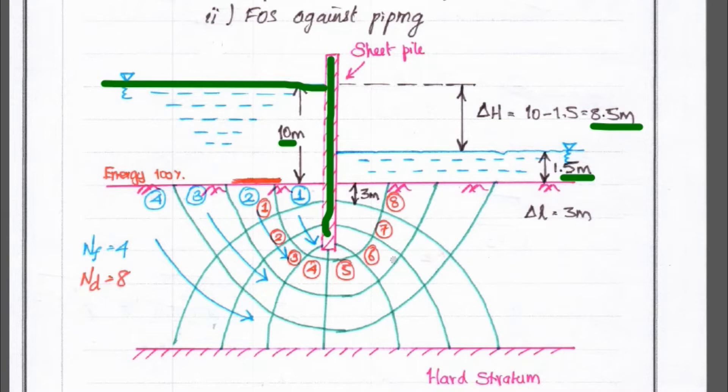So, again we have the flow lines over here. So, the number of flow channels is 1, 2, 3, 4. So, there are 4 that is nf is equal to 4 and the number of equipotential drops. So, the equipotential lines are there.